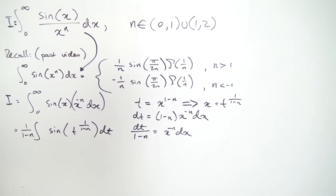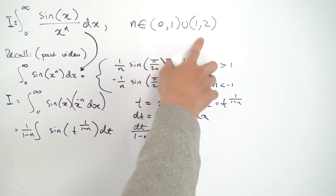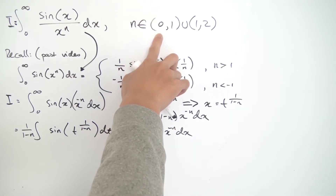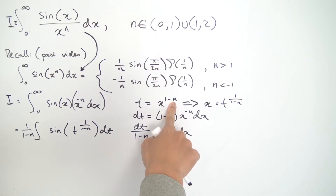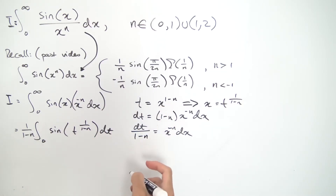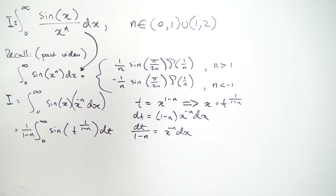The bounds require some care because their orientation depends on the value of n. If n is on (0,1), the exponent 1/(1−n) is positive: plugging in x=0 gives t=0 and x=∞ gives t=∞. But if n is between 1 and 2, the exponent is negative, so the bounds are reversed: x=0 gives t=∞ and x=∞ gives t=0. We need to consider two cases.